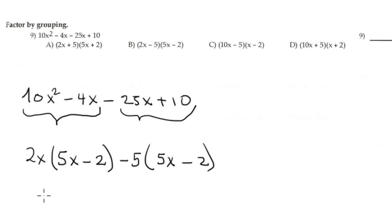Same binomial. When your situation happens, you factor out 5x minus 2, and inside the new parenthesis we have 2x minus 5.